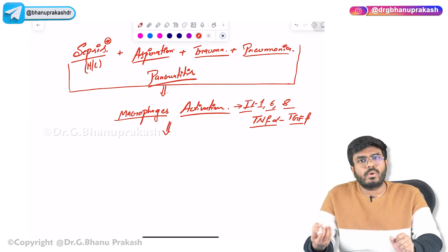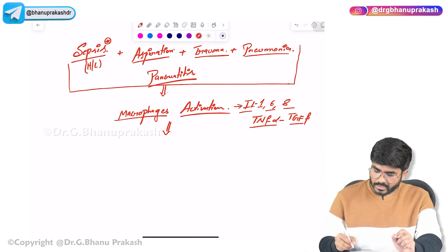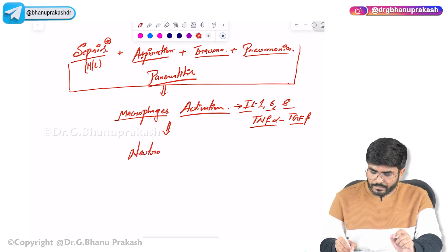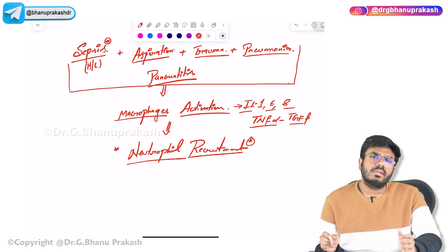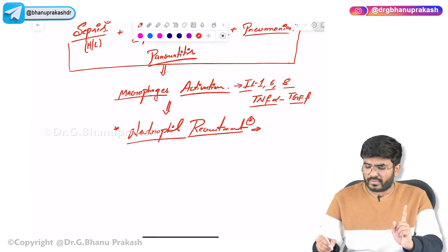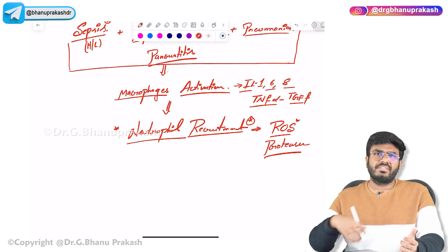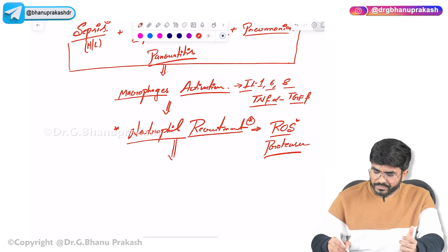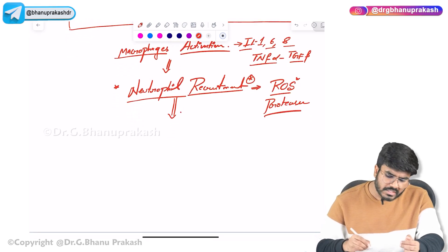These cytokines signal the recruitment of neutrophils. The neutrophils enter into the lungs and they are not going to sit calmly — they produce reactive oxygen species and proteases. These toxic mediators — reactive oxygen species and proteases — are the ones responsible for endothelial damage.